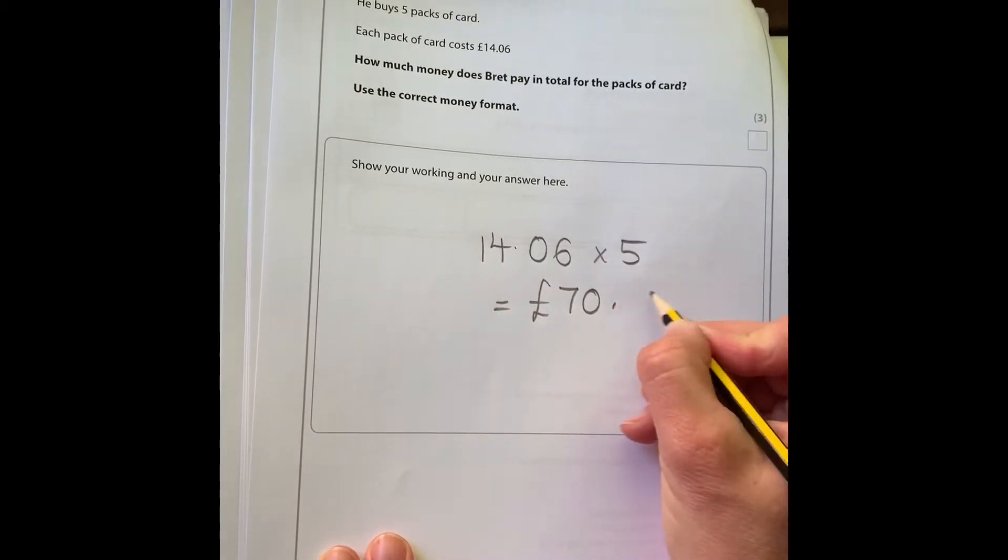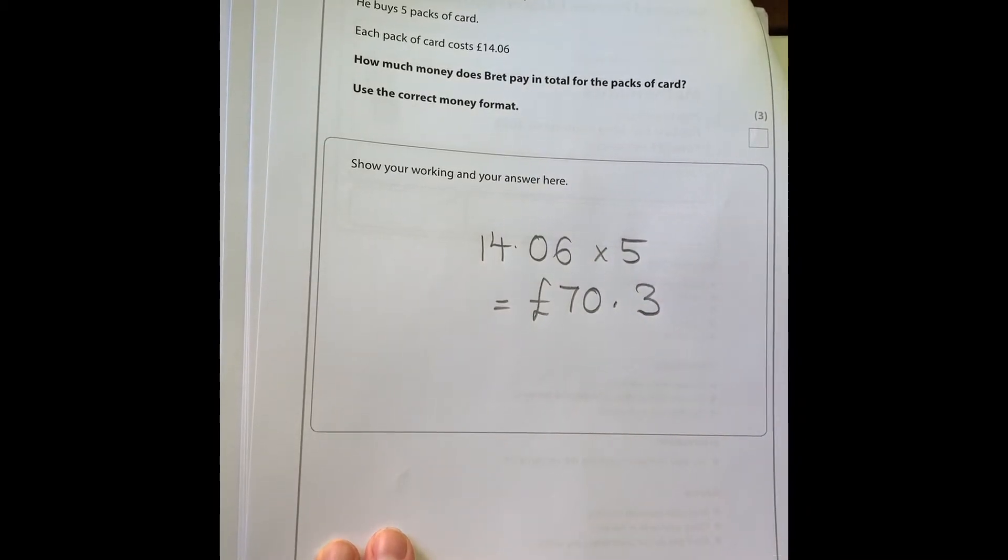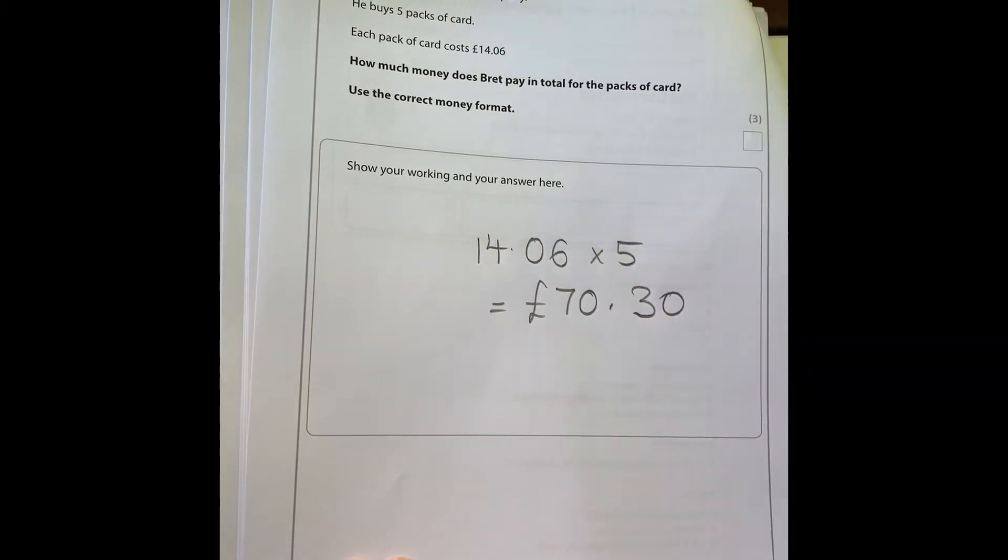That gives us 70.30 on the calculator, but because it's money I'm going to add the extra zero so we've got two decimal places.